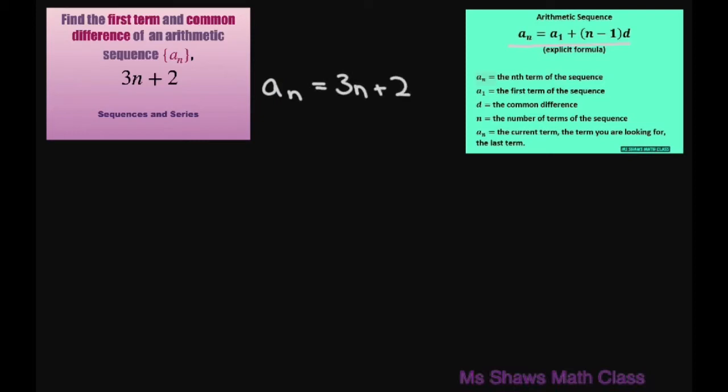So when you do your first term a_1 you just substitute in 1. So it's 3 times 1 plus 2 equals 5.